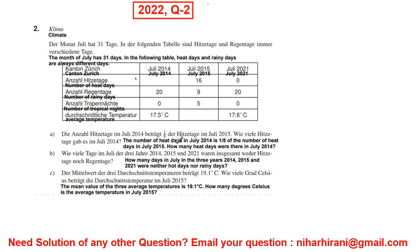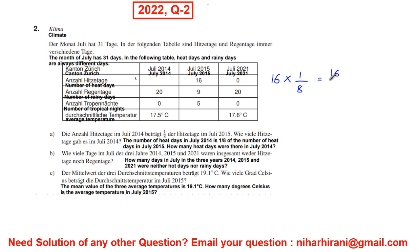Let us solve part A. The number of heat days in July 2014 is one eighth of the number of heat days in July 2015. July 2015 has 16 heat days, so times one over eight gives 16 over 8, which equals 2. So the answer for A is 2.